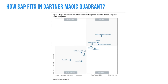Let's now see what Gartner thinks about SAP cloud fitment. As you can see, SAP HANA Cloud is already an industry leader, sharing that position with Oracle Cloud and Workday. It's not entirely clear what Oracle has in the subledger system space — if you know, feel free to share in the comments.